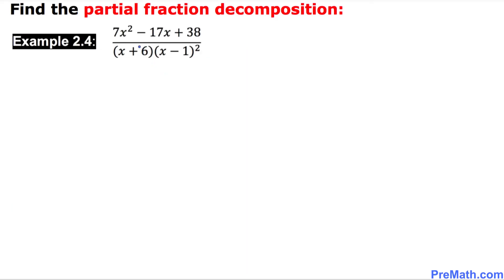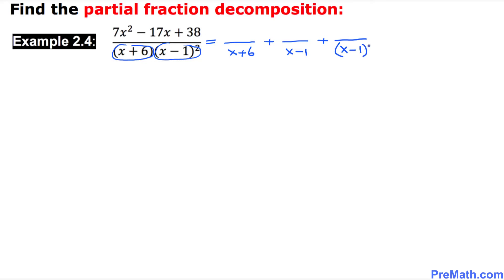Here is our next example. The first factor is linear: x plus 6. The next factor is x minus 1, repeating itself twice. So the first fraction has x plus 6 as denominator. Then for x minus 1 power 2, we put two more fractions: x minus 1 power 1 and x minus 1 power 2. The numerators are A for the first, B for the second, and C for the third.